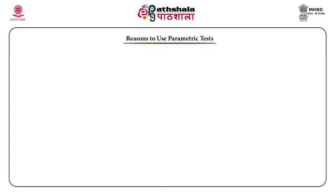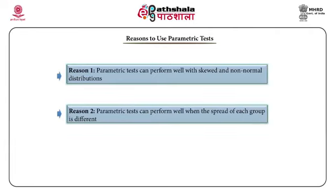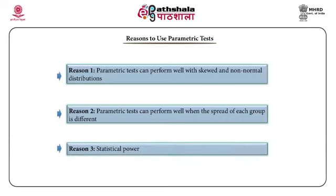Reasons to use parametric tests: First, parametric tests can perform well with skewed and non-normal distributions. Second, parametric tests can perform well when the spread of each group is different. Third, statistical power — meaning that in terms of use and application, parametric statistical tests show more robustness in terms of interpretive understanding and analytical discussions.